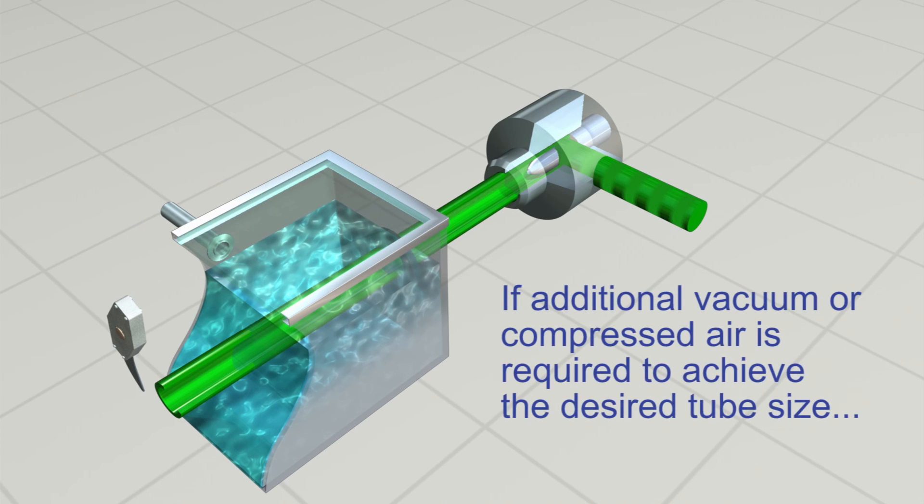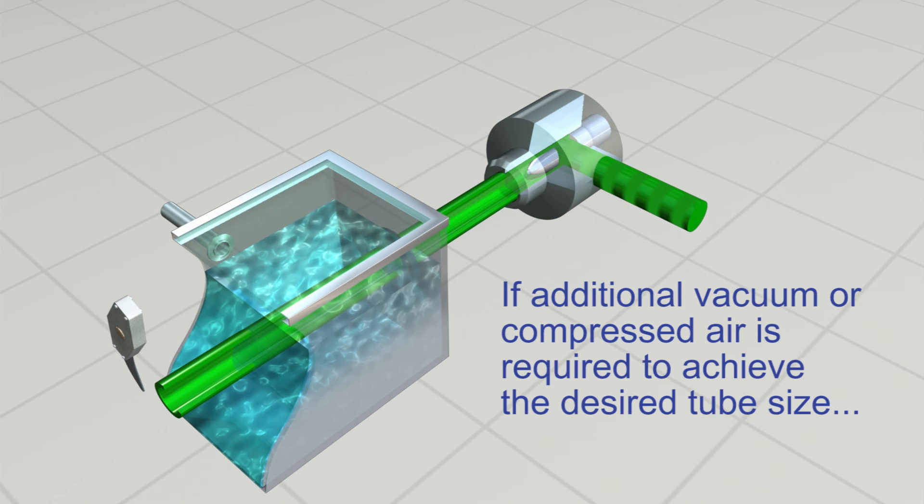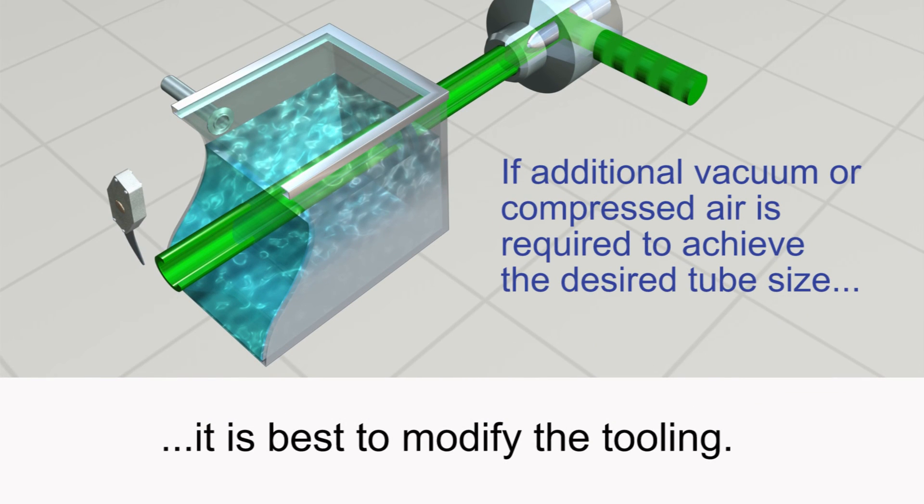If additional vacuum or compressed air is required to achieve the desired tube size, it is best to modify the tooling.